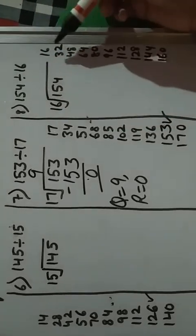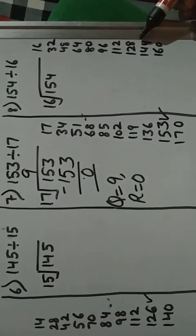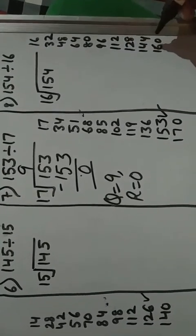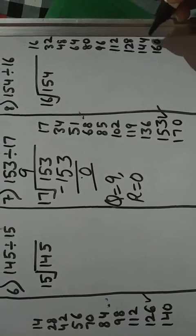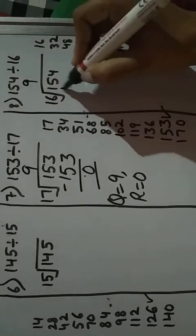153 minus 153. Which number is less than 16? 160 is greater than 154. It also comes on 9.